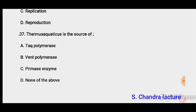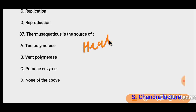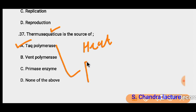Question 37: Thermus aquaticus is a bacterium found in hot springs under high temperature conditions. From this organism an enzyme called Taq polymerase was discovered, which we use in PCR. This enzyme is temperature-resistant.